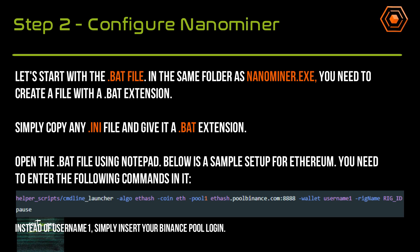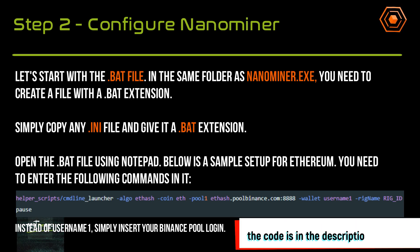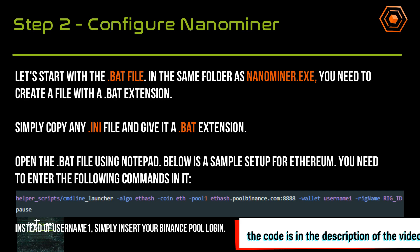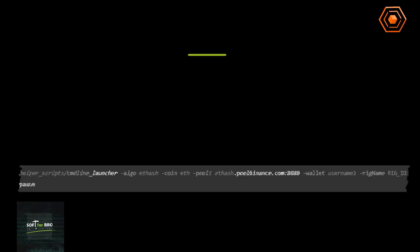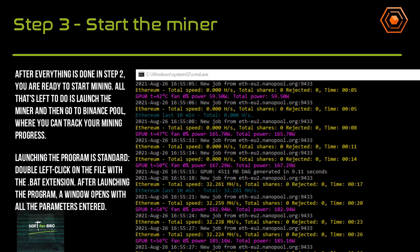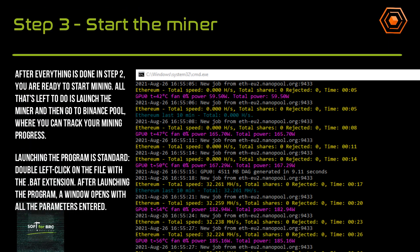Open the BAT file using Notepad. Below is a sample setup for Ethereum — you need to enter the following commands in it. Instead of 'username one', simply insert your Binance Pool login. After everything is done, you are ready to start mining. All that's left is to launch the miner and go to Binance Pool where you can track your mining progress.